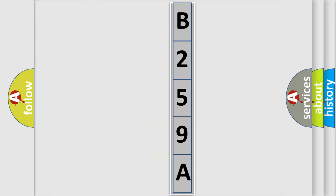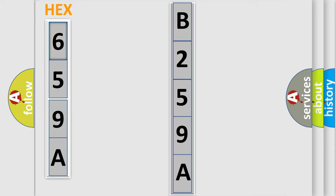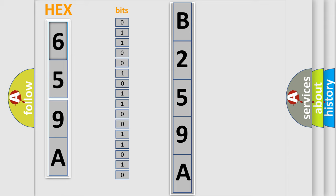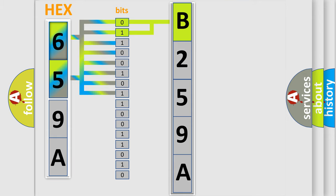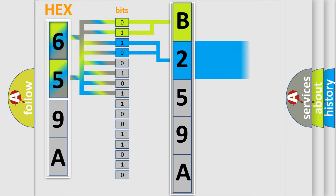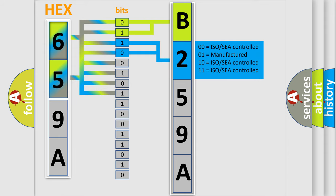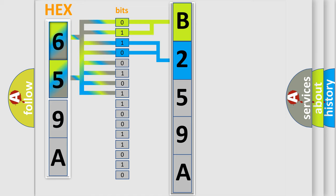The error code is split into two bytes consisting of 16 bits. One bit is the basic unit that each computer works with. The bit has two logical states: zero, low level, and one, high level. By combining the first two bits, the basic character of the error code is expressed. The next two bits determine the second character. The last bits of the first byte define the third character of the code.